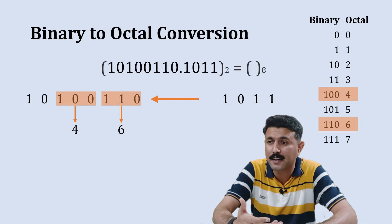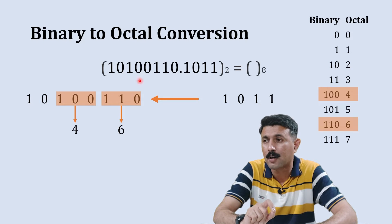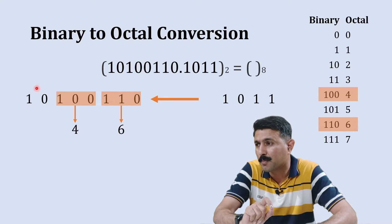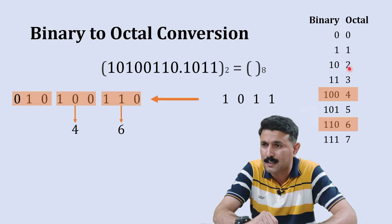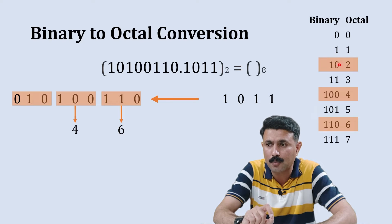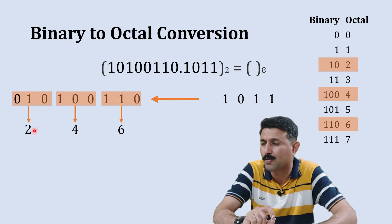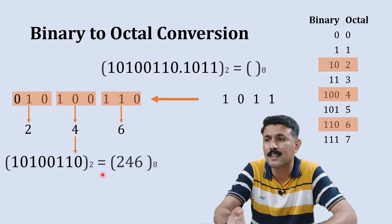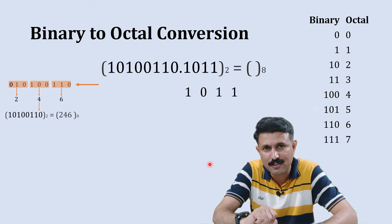Here we have only two digits remaining, but we need three digits to convert to octal. When solving the integer part — the left-hand side from the decimal point — you add a zero on the left-hand side. So now this number becomes 010, a group of three. Zero-one-zero represents 2. So we write 2 here. Therefore, 246 is the octal equivalent to this binary integer part.